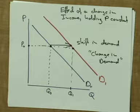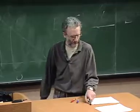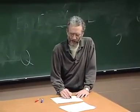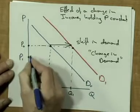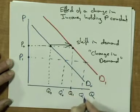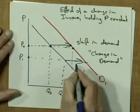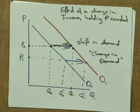Each curve is a relationship between price and quantity demanded. And if you change something else, like income, you shift that whole relationship. So here, for instance, at the original price, quantity demanded increases. But at a lower price, quantity demanded also increases — quantity demanded increases for every price. This is a whole shift in the curve, a change in the whole relationship between price and quantity demanded.